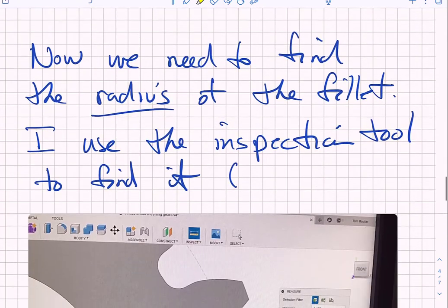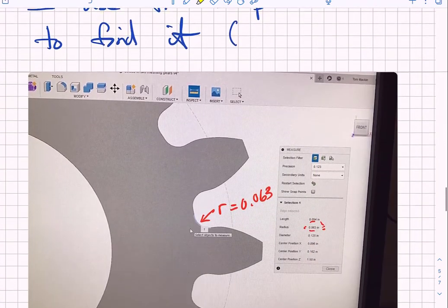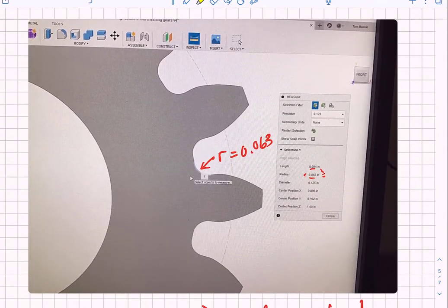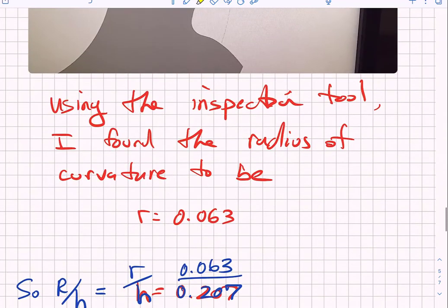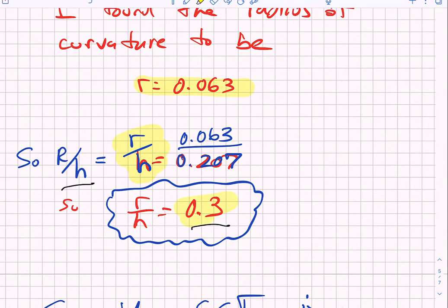And now we need to find the radius of the fillet but I actually built this with the fillet radius of 0.063 inches. And so I can use the inspection tool to measure that. So I have a radius of 0.063 which gives me an R over H value of 0.3.